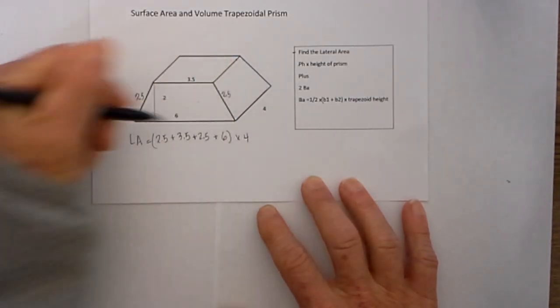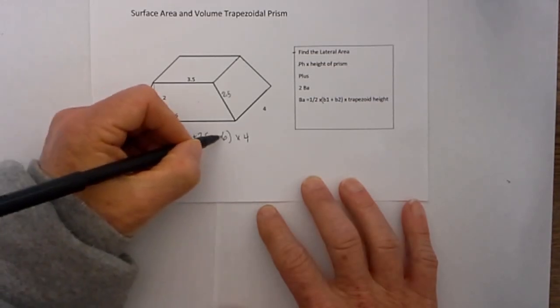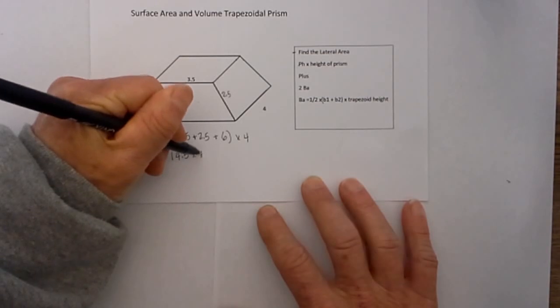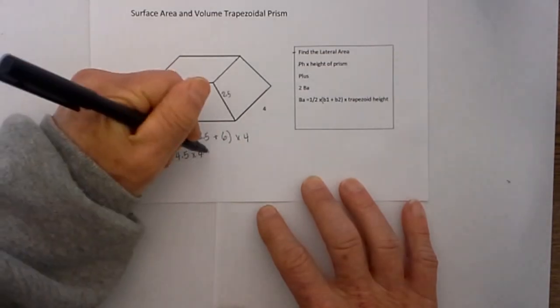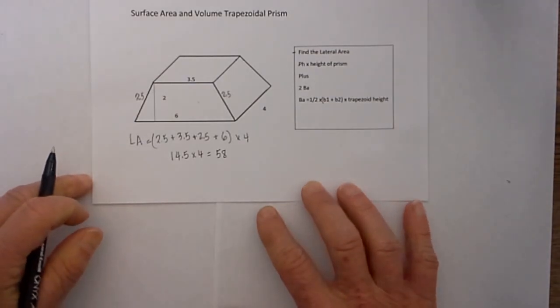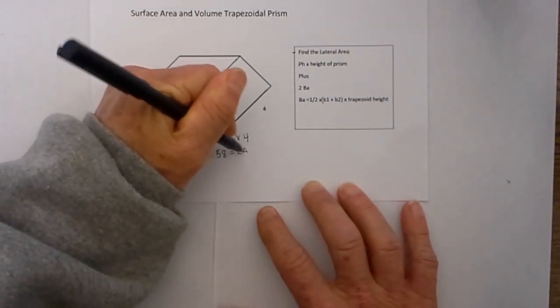So when we add 2.5 plus 3.5 plus 2.5 plus 6 gives us 14.5 times 4 which is the height of the prism and that equals 58. So that is the lateral area.